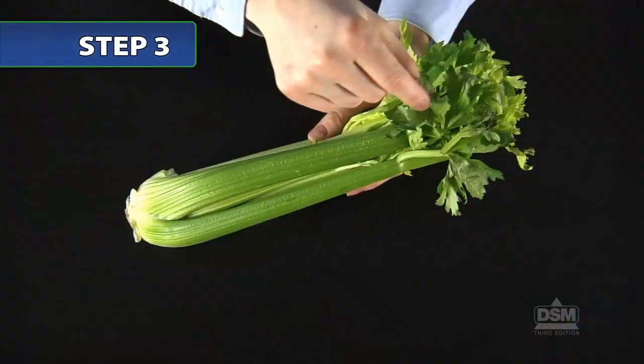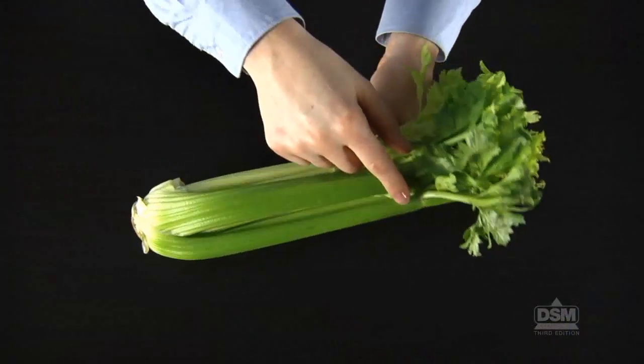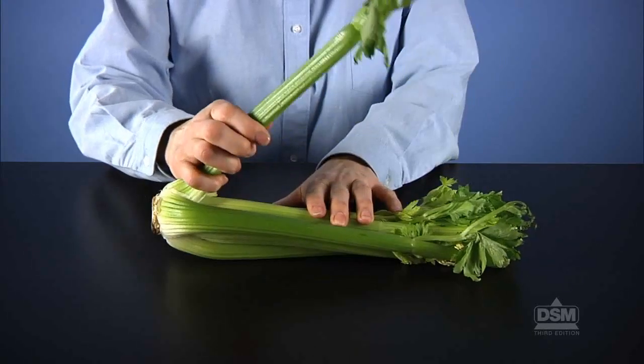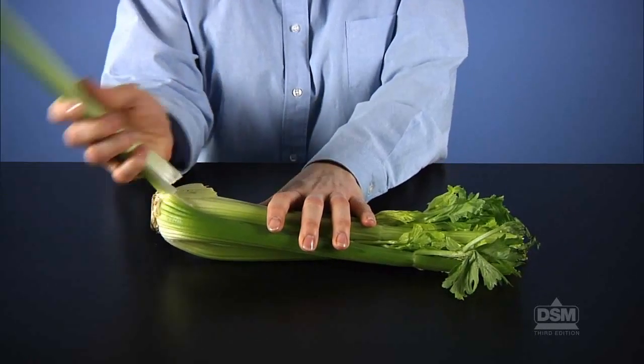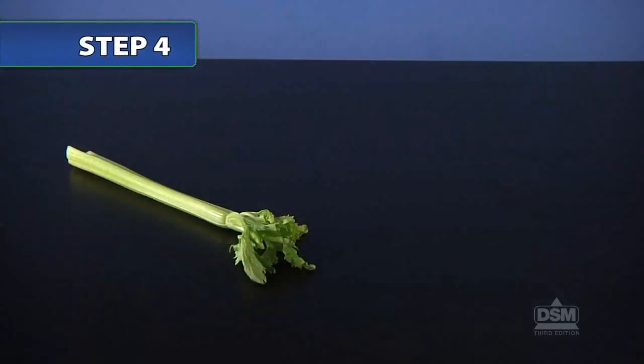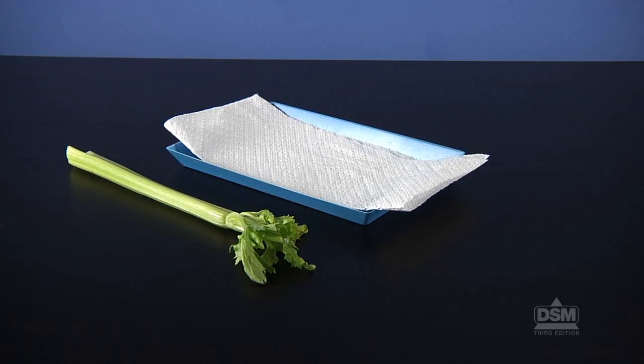Hold up a bunch of celery and point out the leaves at one end and the location of the roots at the other. Break off a stalk and explain that each of the stems of this plant is often referred to as a celery stalk. Distribute one celery stalk, a tray lined with a paper towel, and a plastic knife to each team.